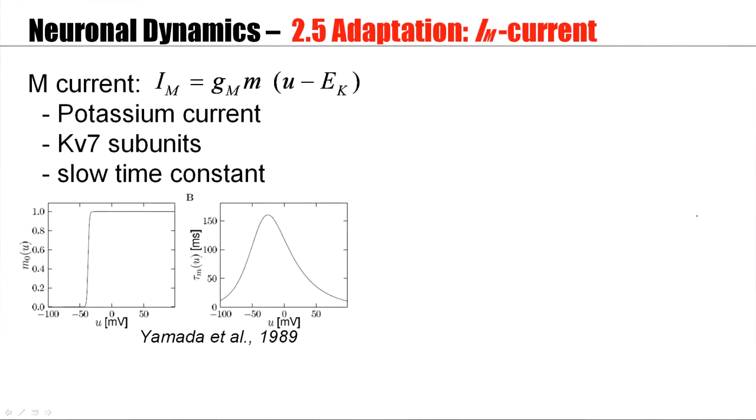So, here's a current that's involved in adaptation, the IM current. The IM current has a time constant as a function of voltage, which is shown here, and an activation profile, which basically starts at minus 45 or minus 40 millivolt. That means this channel is activated only during spikes. The spiking threshold would sit about here.